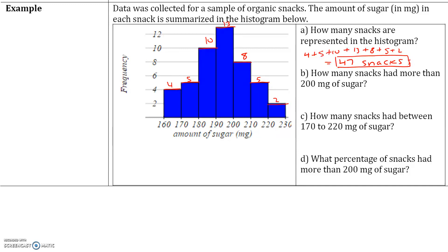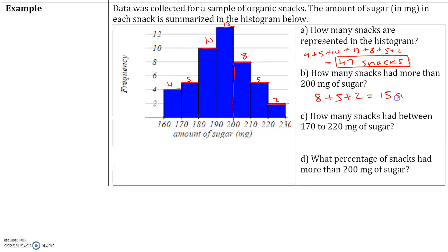Part B: how many snacks had more than 200 milligrams of sugar? Any snack with more than 200 milligrams will be included. We have 8 snacks in the 200 to 210 class, plus 5 snacks in the 210 to 220 class, and 2 snacks in the 220 to 230 class. If we add these up, this gives us 15 snacks.